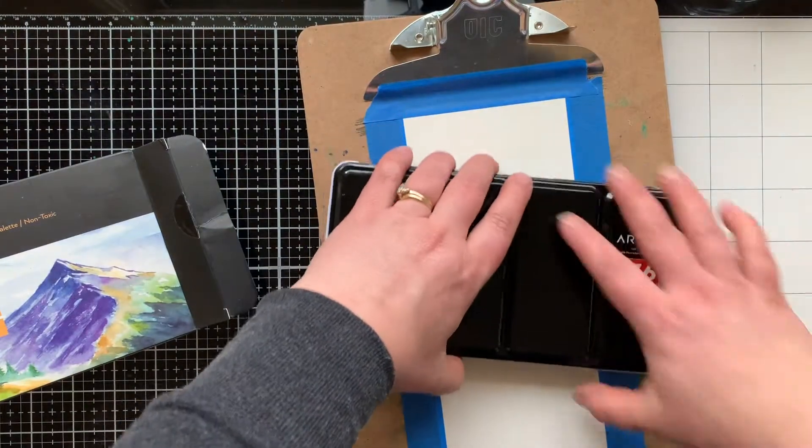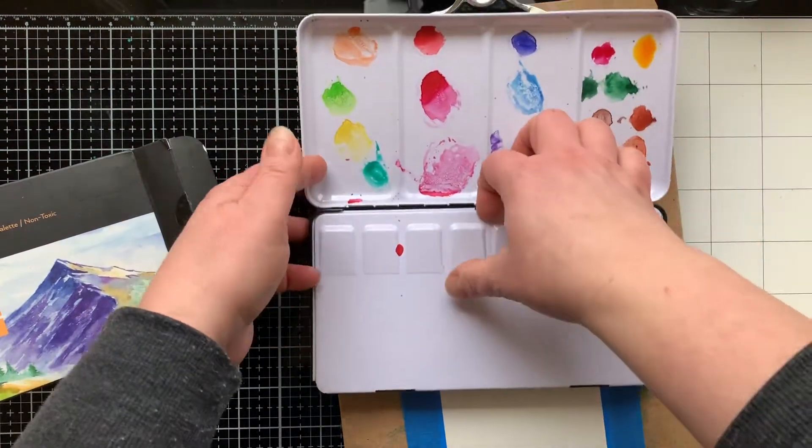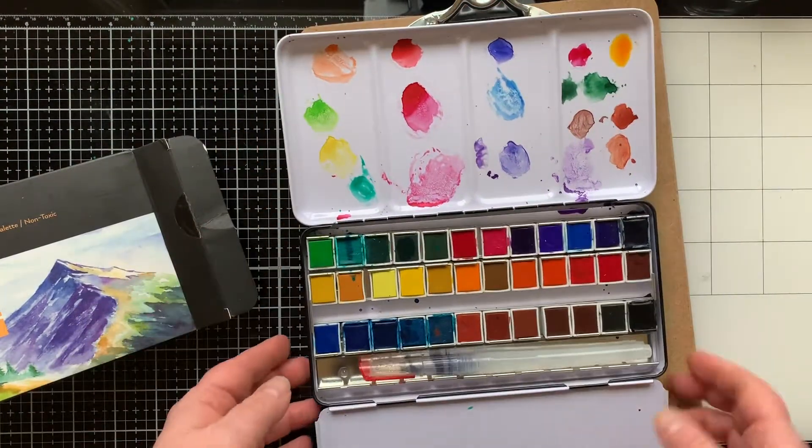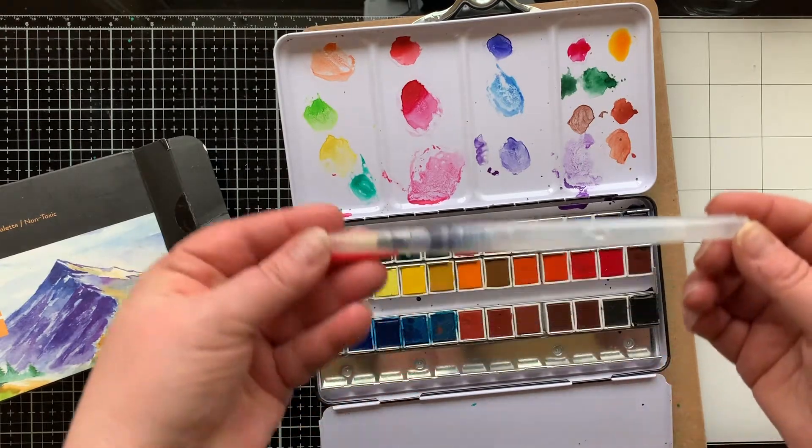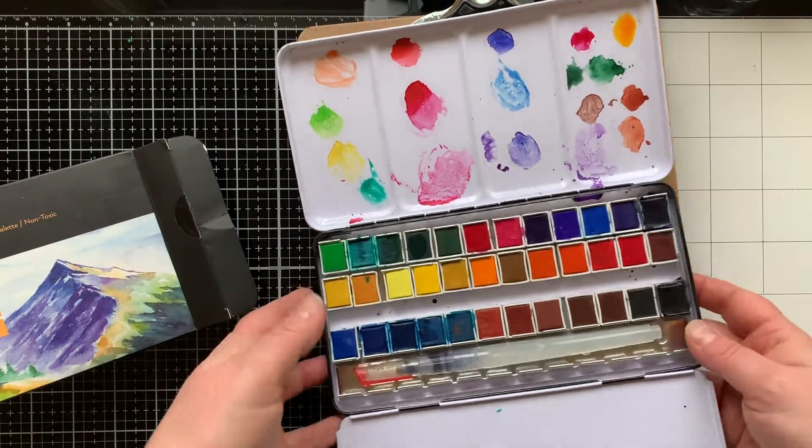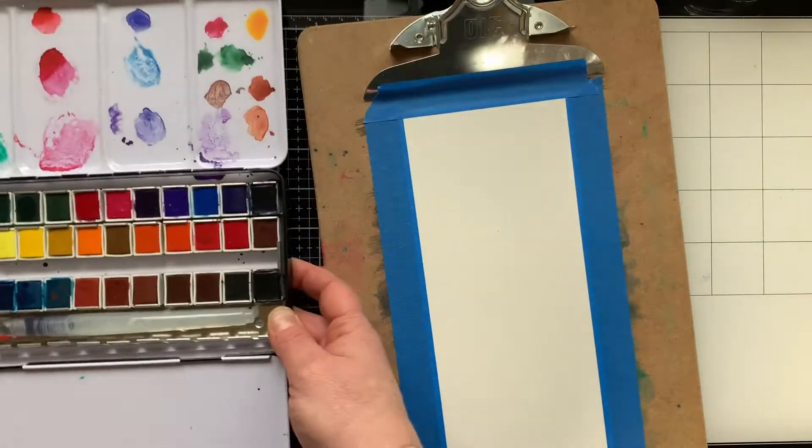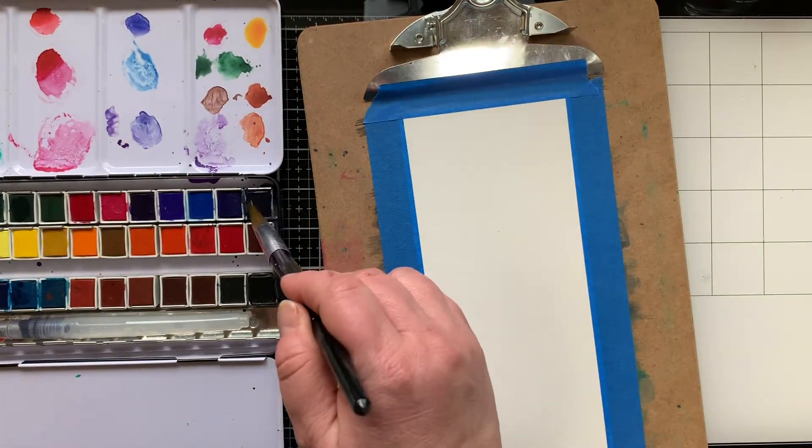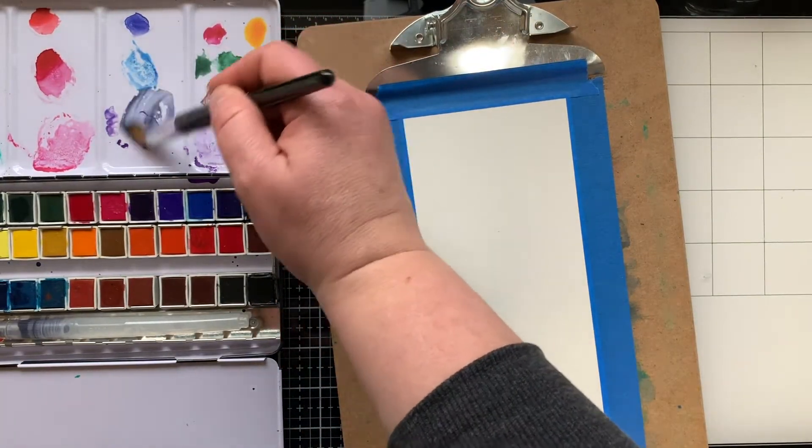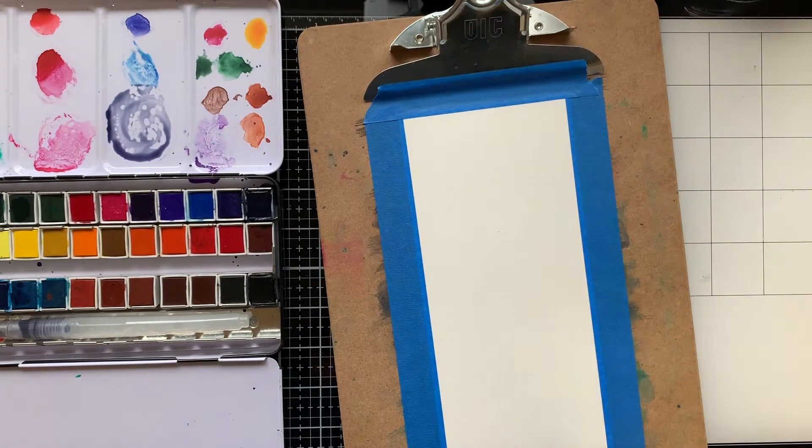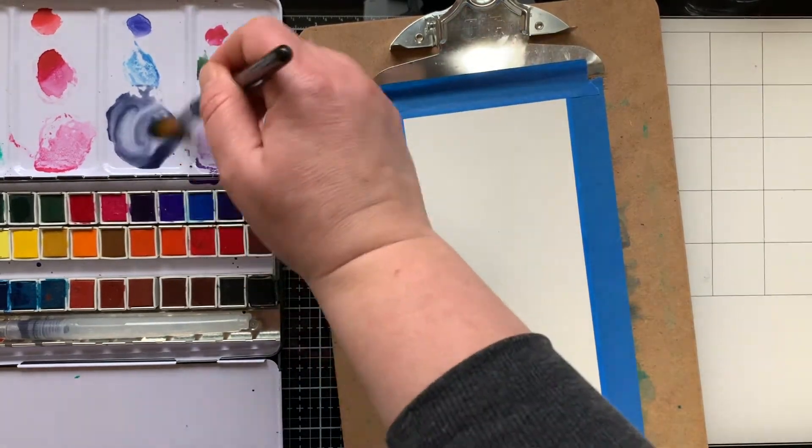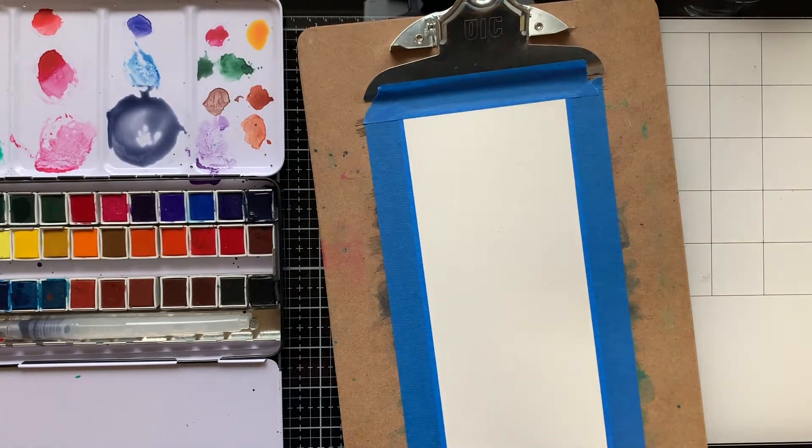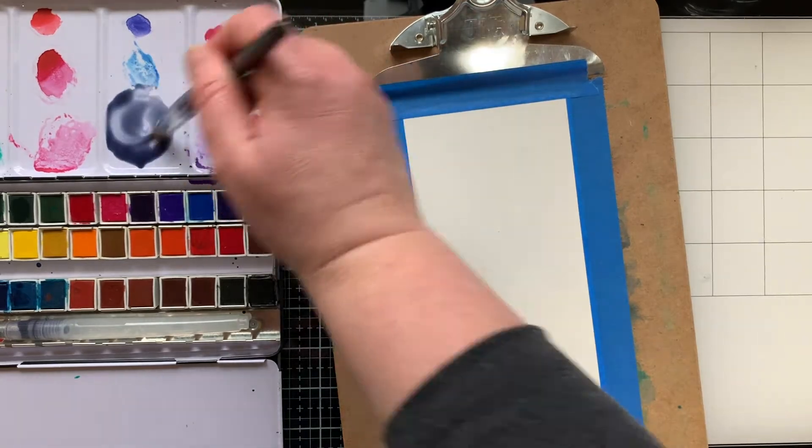This watercolor set comes with a water brush, however I'm going to be using a larger paintbrush today just because I have such a large area that I'm trying to watercolor. So here's the brush now and I'm going to use the little pan to mix the color with a lot of water to make it nice and thin.